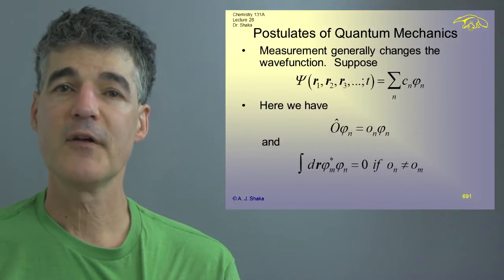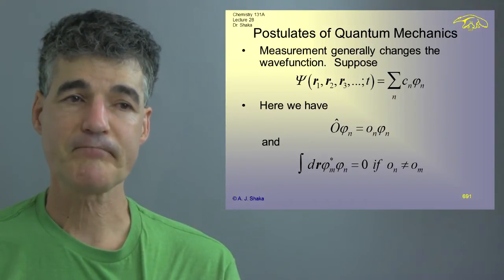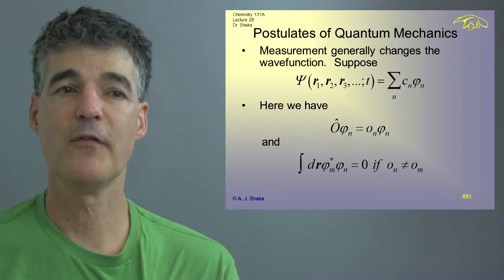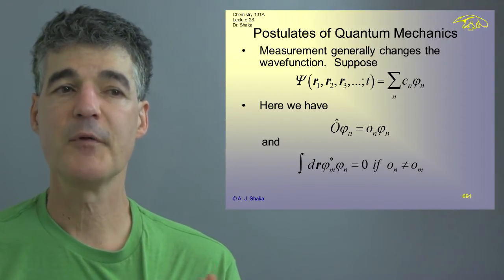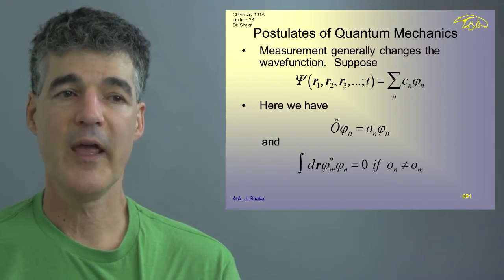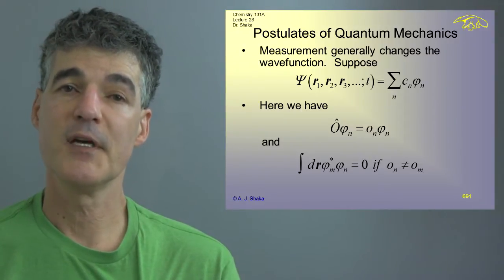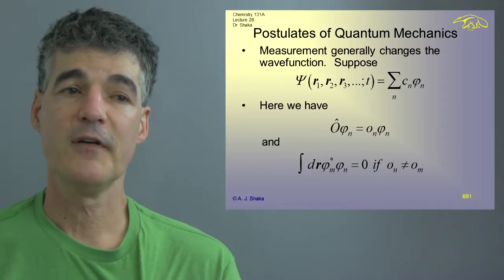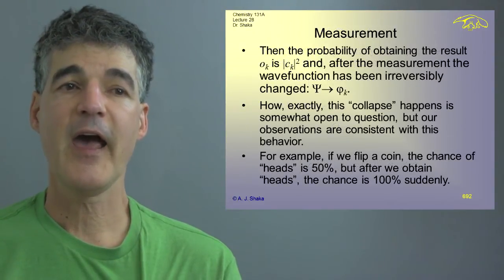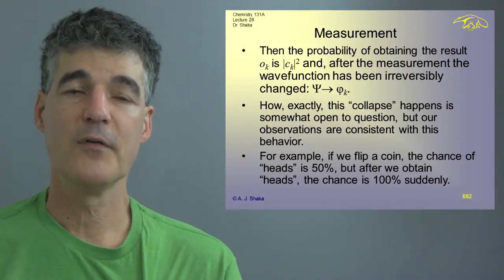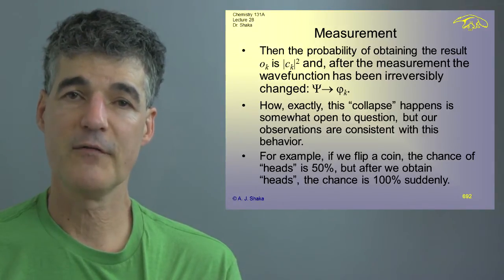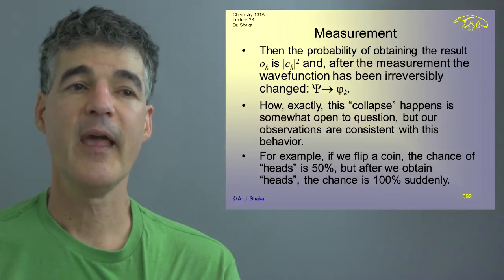When we make a measurement, we generally change the wave function and if we have, first of all, a superposition, which I've written here on slide 691 as the sum over n of Cn phi n. And then we make a measurement. We put on O hat on an eigenstate phi n and we get an eigenvalue O n. And we know if the measurements give a different eigenvalue that the functions are orthogonal, which is expressed by the integral of the product being zero, then after we obtain the result O k, O sub k, the probability of obtaining that result is given by the square of the expansion coefficient, C sub k squared.